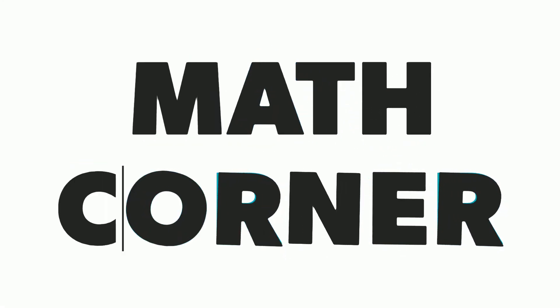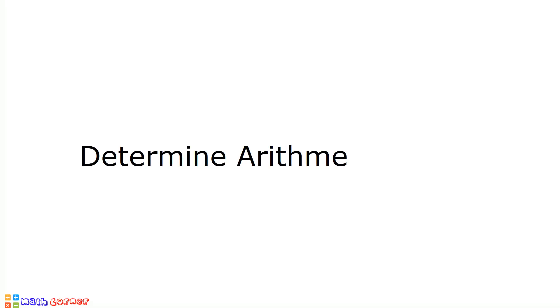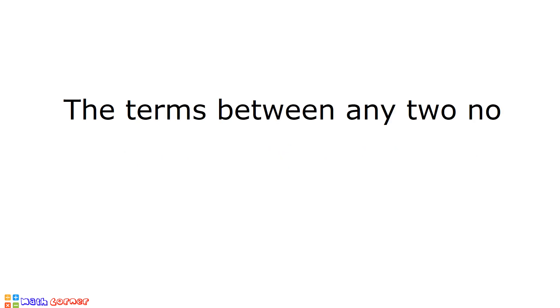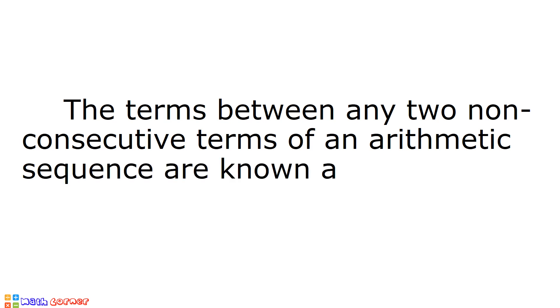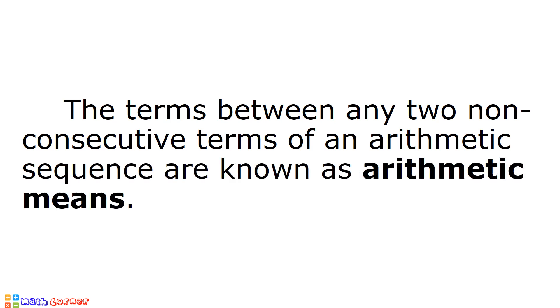Hello everyone. Welcome to Math Corner. In this video, we will determine arithmetic means. Arithmetic means are the terms between any two non-consecutive terms of an arithmetic sequence. To determine arithmetic means, we have to solve for the common difference, and we will add the common difference to the term before the missing term.